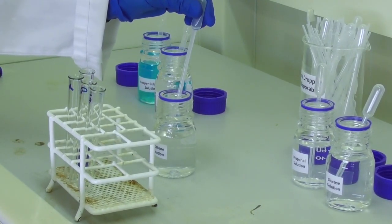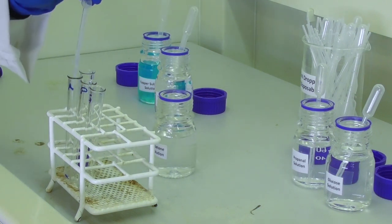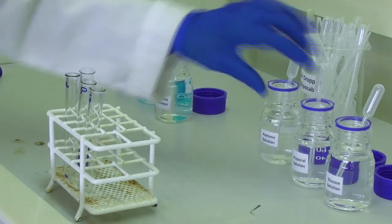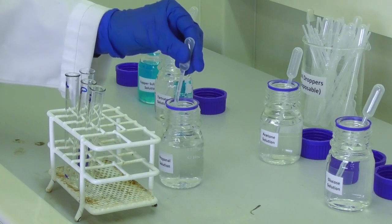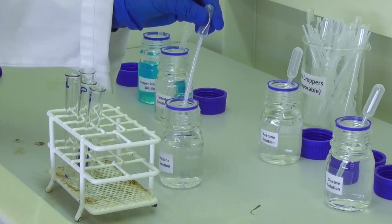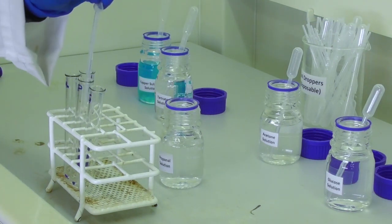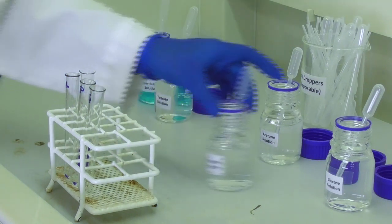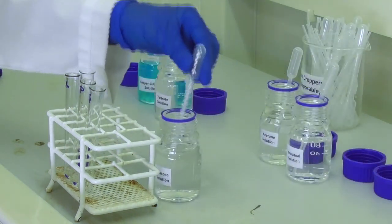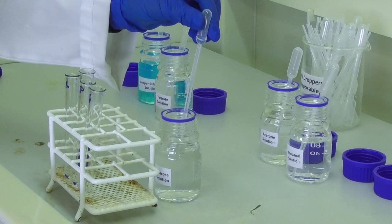We dispense one milliliter of acetone into the first test tube, one milliliter of propanol into the second test tube, and then one milliliter of glucose into the third test tube.